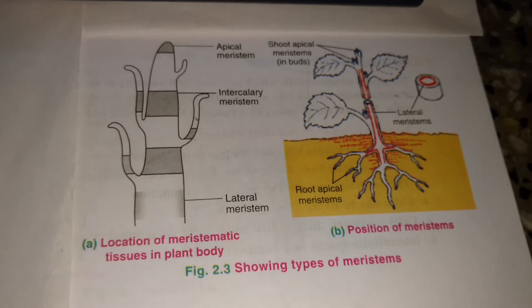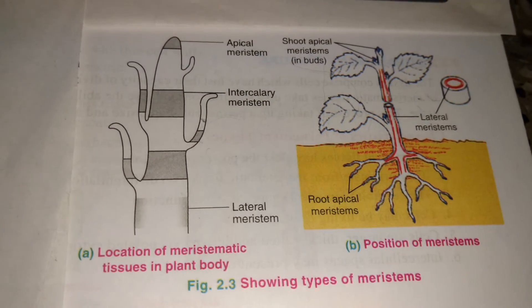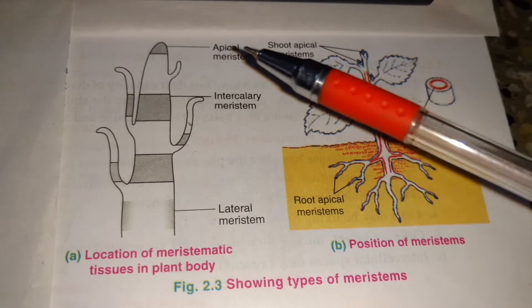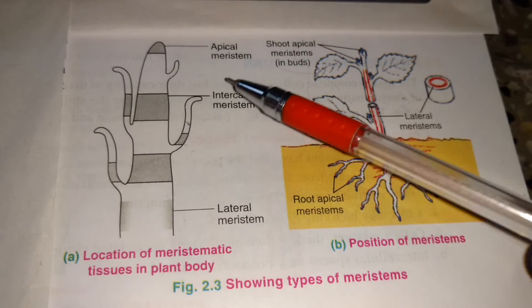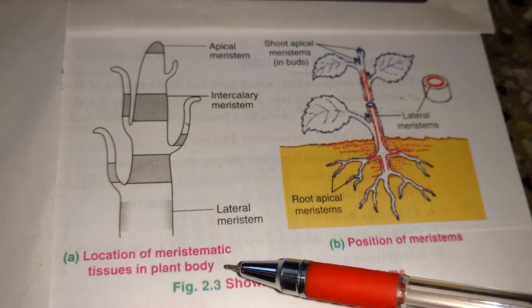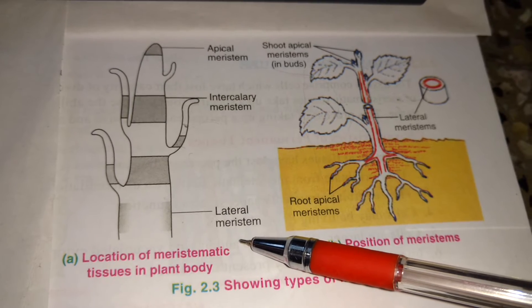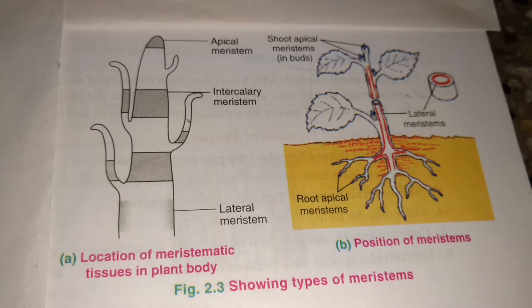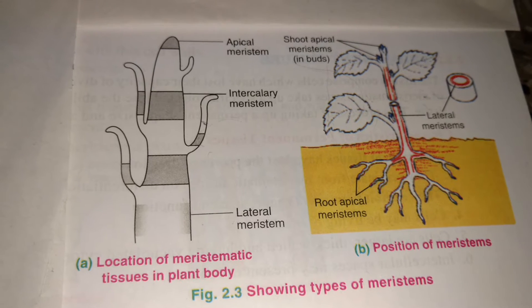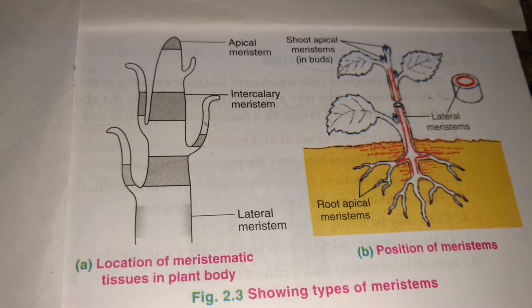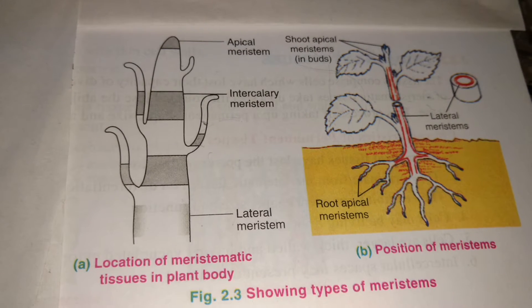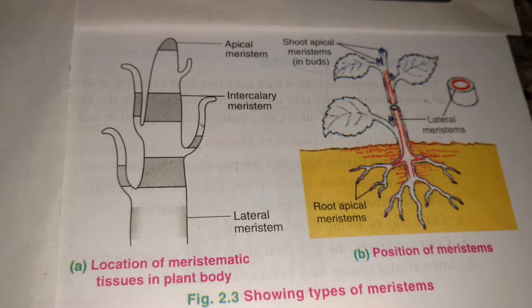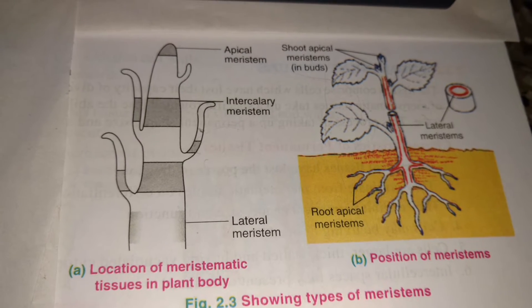Now, we have to see the types of meristem: apical meristem, intercalary meristem, and lateral meristem. Apical meristem is located at the growing tips of stems and roots, and they increase the length of the stem and root.